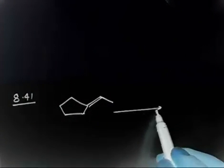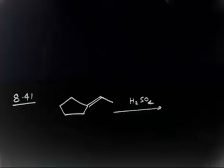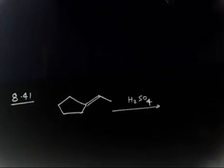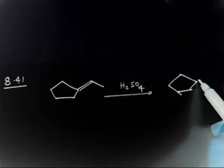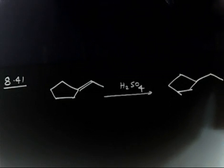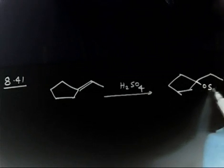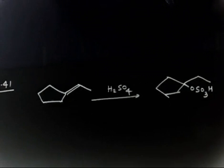We have to give the mechanism for the following reaction, problem 8.41. We have an alkene with a double bond and a methyl group. Treating with H₂SO₄, the final product we are getting has an OSO₃H group. You have to give the mechanism for this reaction.